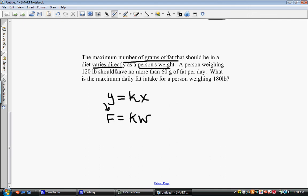So now we have to do the math involved. It says a person weighing 120 pounds, so there's our number, and that's the weight should have no more than 60 grams of fat per day. Now if we substitute that into what we have, we have the 60 grams of fat, see that's fat, so that goes in place of F. And we have the weight of 120. We now have an equation so that we can find the variation constant. 60 divided by 120 is .5.